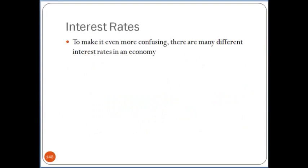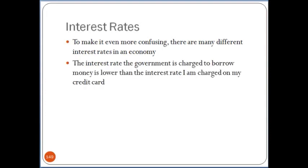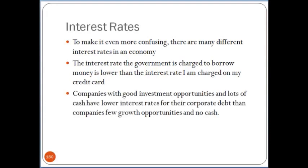To make it even more confusing, there are a lot of different interest rates in an economy. The interest rate that the government is charged to borrow money is lower than the interest rate charged on a credit card — the U.S. government is simply much less risky, so it can command really good rates. Companies with good investment opportunities and a lot of cash — Google, Apple, Microsoft — are going to have lower interest rates for their corporate debt than companies with few growth opportunities, no cash, or brand new unproven companies.